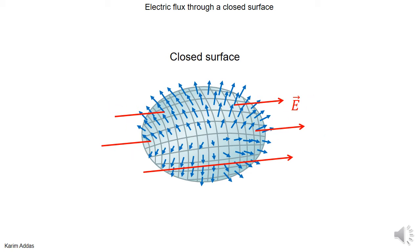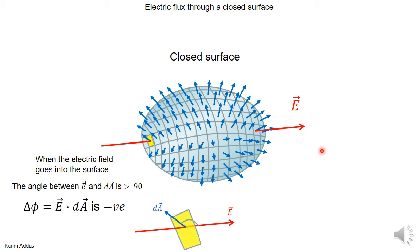You have electric field vectors pointing here like that. Let's look at what happens when the electric field vector goes into the surface. For this element of area highlighted in yellow, let's zoom in and see what's happening. The area vector points perpendicular to the surface and points outward — it doesn't point inward — because the area vector has to go from inside to outside.